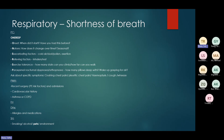E is for Exacerbating factors — cold air, dust, pollen, exertion. Is it worse on exertion, when lying down, or sitting up? R is for Relieving factors — do inhalers help? Does rest make it better? E is for Exercise tolerance — how far can they walk, how many flights of stairs can they climb? This gives a good benchmark to compare as the patient progresses and assess whether they're getting better or worse.